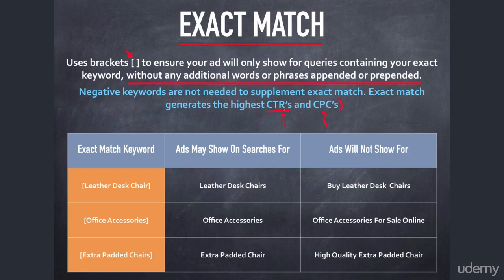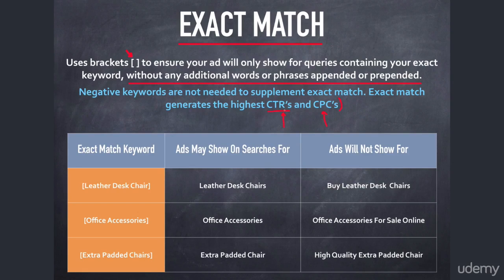Exact match is very specific to just the research you've done. It's a great idea when you know exactly how people search for your products and services, or when you've generated a lot of data — you've been spending money on broad match, broad match modified, and phrase match keywords and gotten good ideas from your query report. You can use the query report to continuously expand your exact match keyword list.